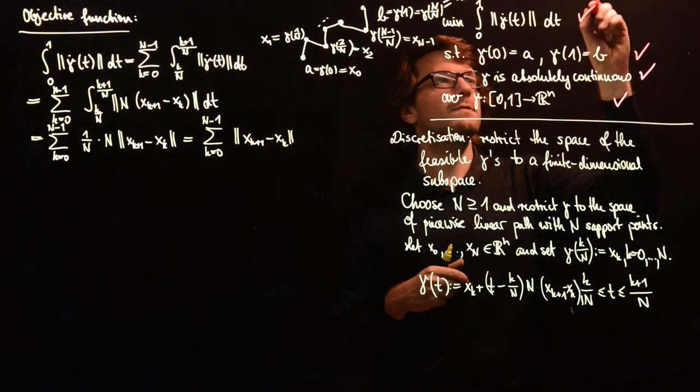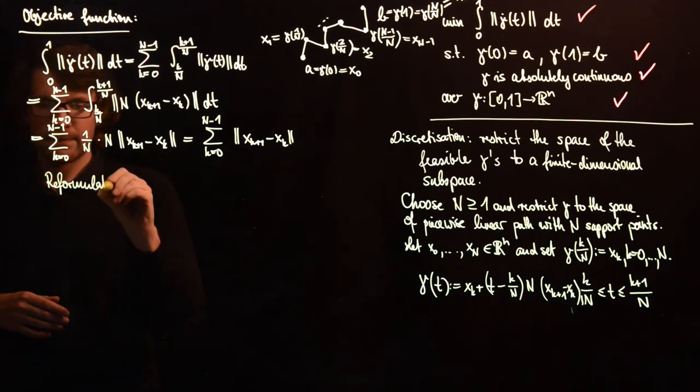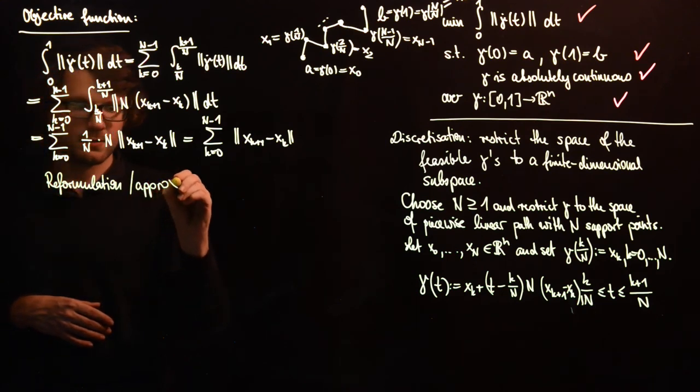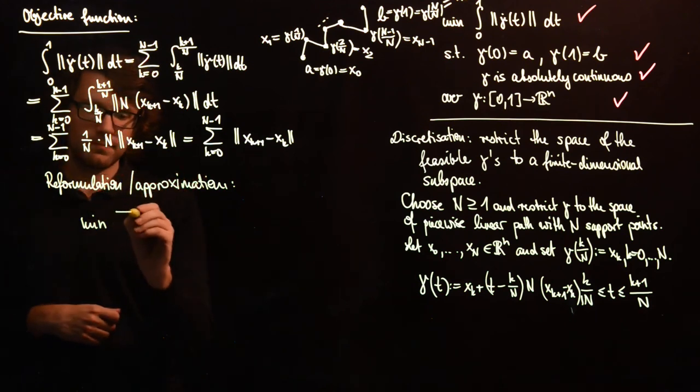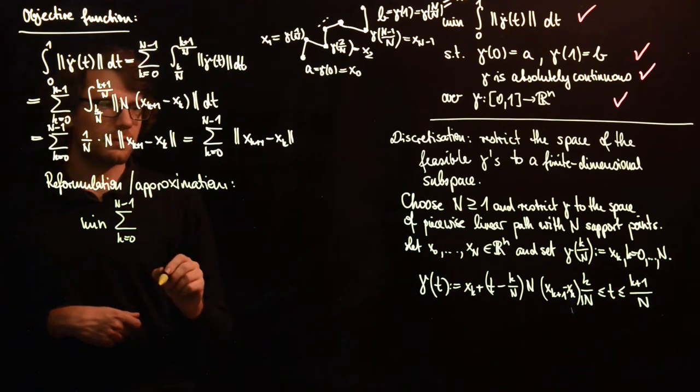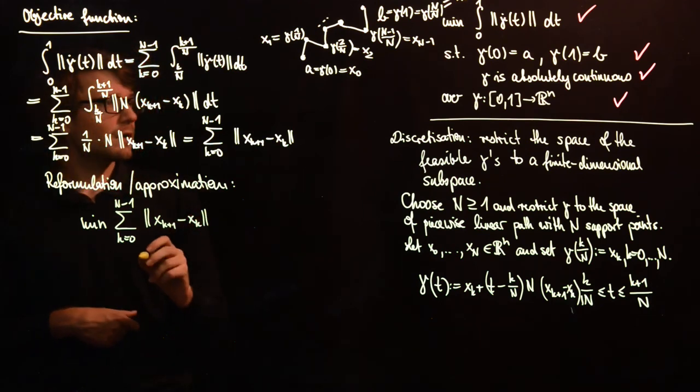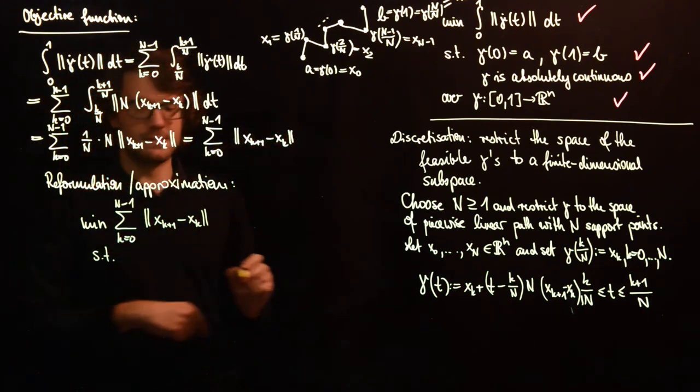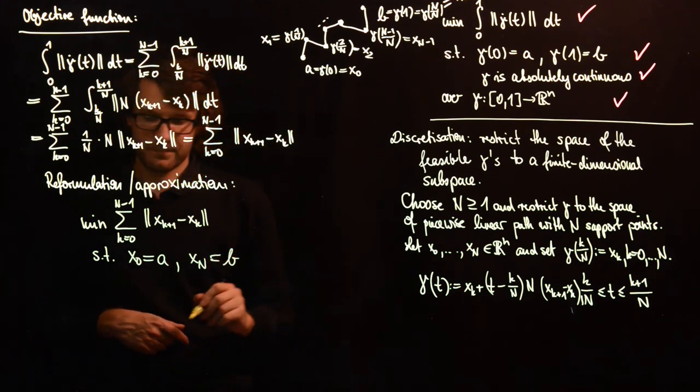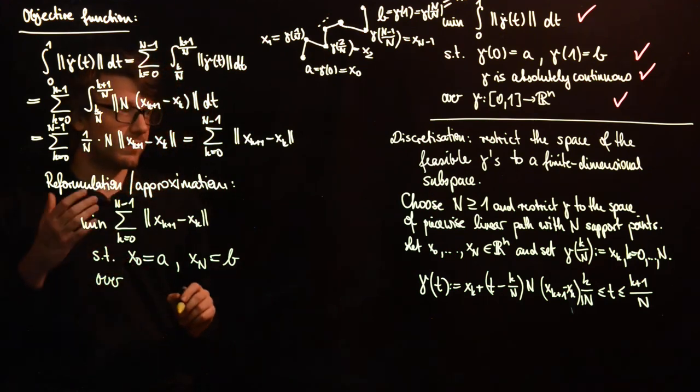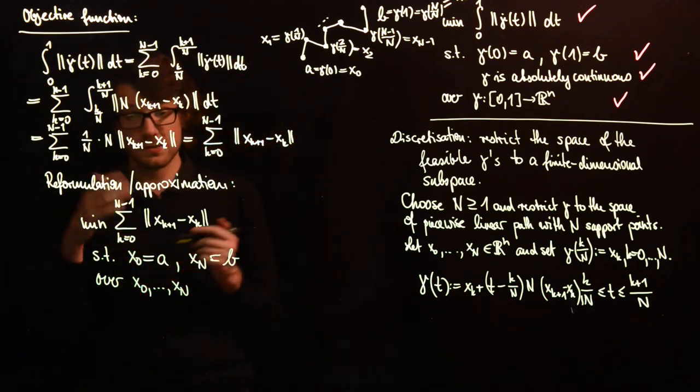So now we have all the parts. We have discussed the constraints and we have discussed the objective function. So we have all the parts together in order to reformulate this. So the reformulation, or it's actually an approximation, it goes like this: minimize the sum over k of norm of xk plus 1 minus xk, such that x0 is equal to A, x capital N is equal to B, and we have finitely many variables x0 to x capital N. So this is a finite dimensional problem.